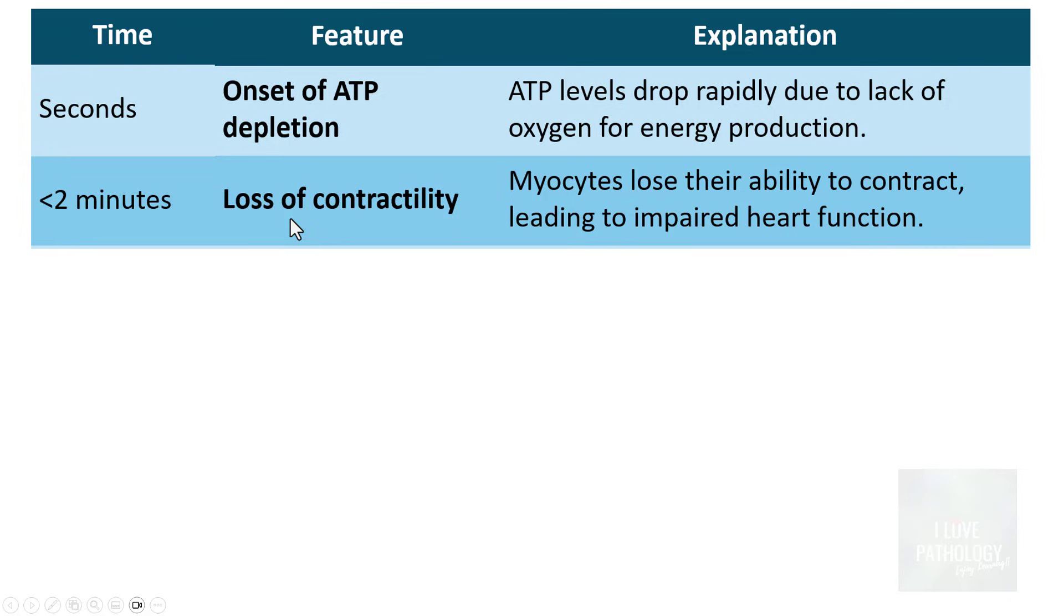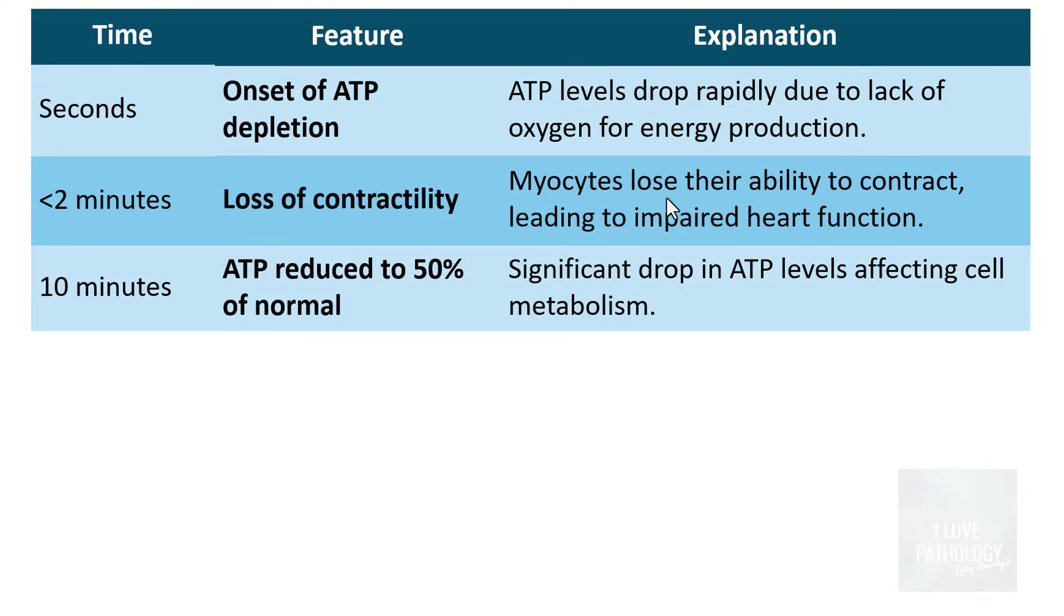In less than 2 minutes there will be loss of contractility. That's what I told you earlier, because myocytes lose their ability to contract and that leads to impaired heart function. In 10 minutes of time, ATP is reduced to 50% of normal, which significantly affects the cell metabolism.